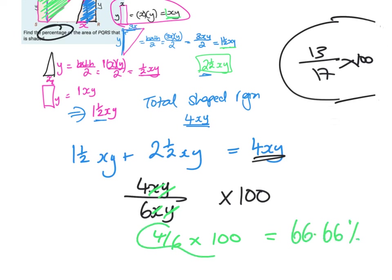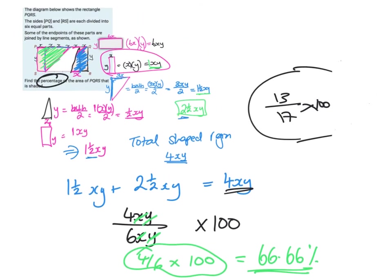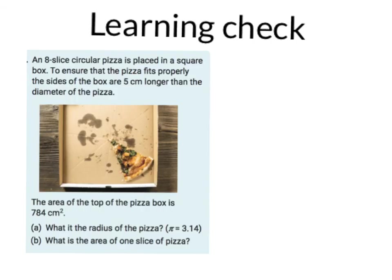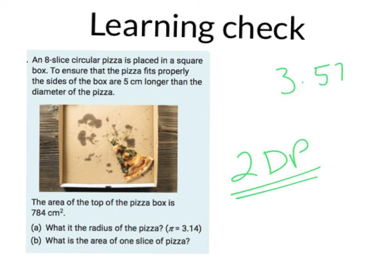You can check that on your calculator. So we've taken a big step up — using area of rectangles and triangles but bringing in algebra. Take down these questions and try the learning check. I'll set up a quiz on Schoology where you can input your answers to two decimal places. For example, 3.579 rounds to 3.58 at two decimal places.